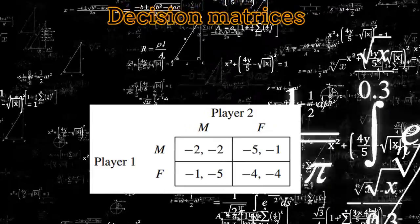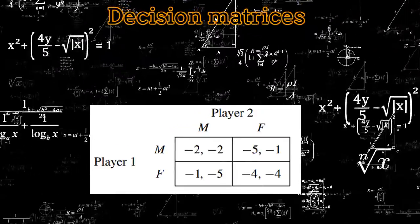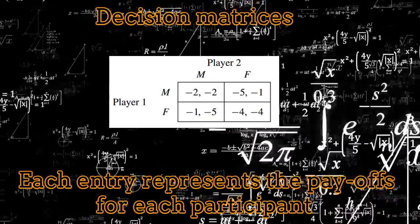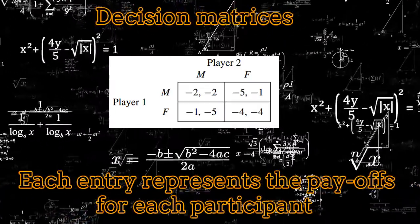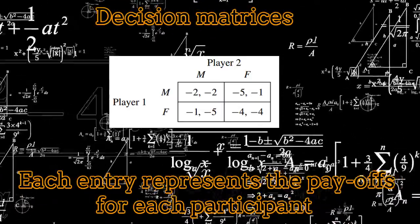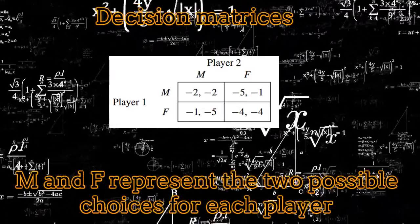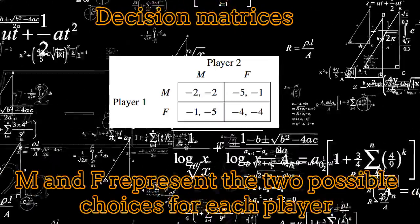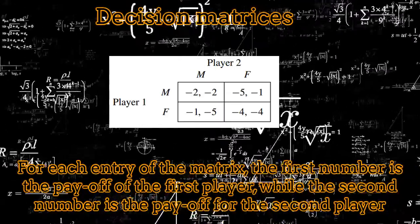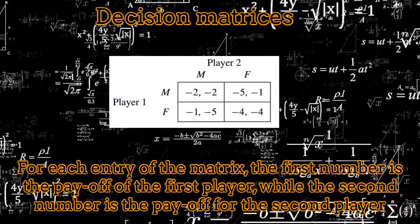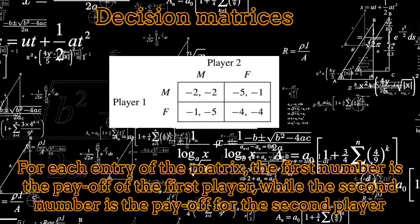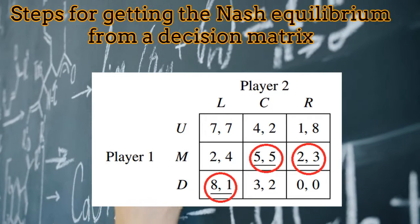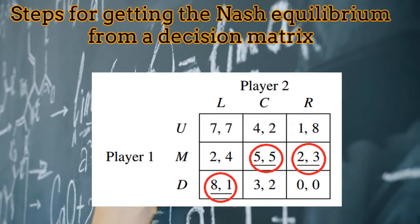The decisions taken by the different participants inside game theory normally appear inside a matrix called the decision matrix. The pair of numbers represents the payoff for each participant. In this matrix, N and F are the two possible choices for each participant. For each entry of the decision matrix, the first number represents the payoff for player 1, while the second number represents the payoff for player 2. Let's analyze now the steps necessary to find the Nash Equilibrium given a decision matrix.